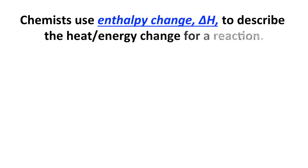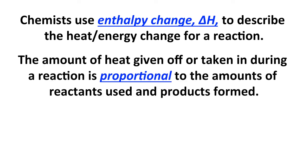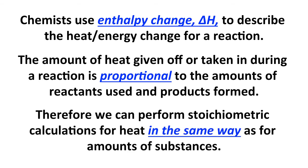You may recall from a previous screencast that chemists use enthalpy change, symbolized by delta H, to describe the heat or energy change for a chemical reaction. The amount of heat that a reaction gives off or takes in is directly proportional to the amounts of reactants used and products formed. Because of this, we can perform stoichiometric calculations for heat involved in chemical reactions in precisely the same way as we do for amounts of substances.